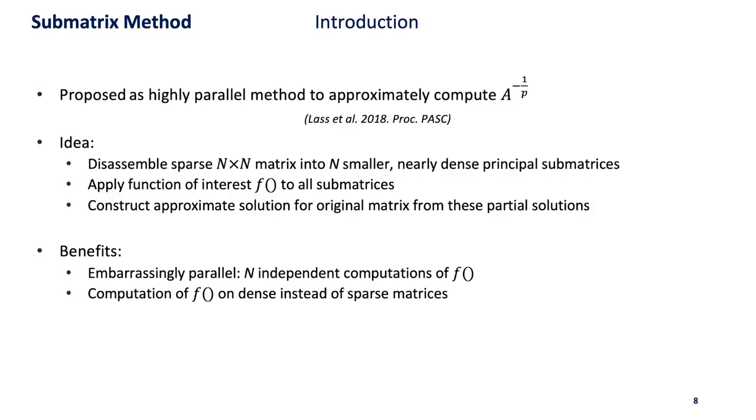The rough idea is that we disassemble our sparse n times n matrix into n smaller nearly dense submatrices, then apply the function of interest, the sign function, to all of these submatrices. We can then construct an approximate solution for the original matrix from all these partial solutions.